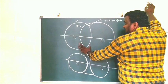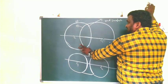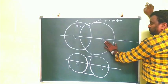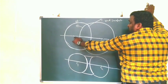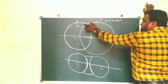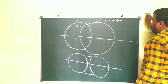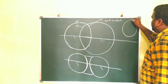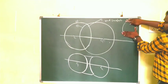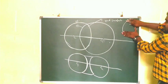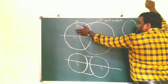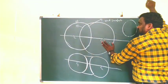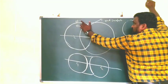So first we take the biconvex lens. We mention the center of curvature of the first curved surface — C1 — and the center of curvature of the second curved surface — C2. We construct two imaginary spheres of which the lens surfaces are parts. The center of the first sphere is C1 and the center of the second sphere is C2.